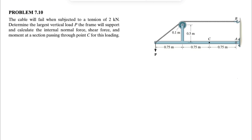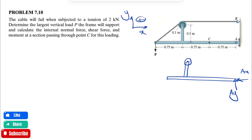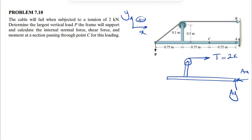We also need to figure out the load P. We have a beam that is connected to a pulley. At A, since we have a pin, we're going to consider two forces: one in the x-direction and one in the y-direction. We have the tension in the cable, which from the question we know is 2 kN, the force P applying on the other end of the beam, and the cable that attaches here.